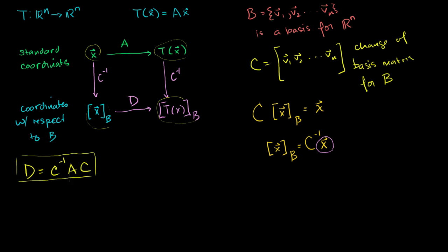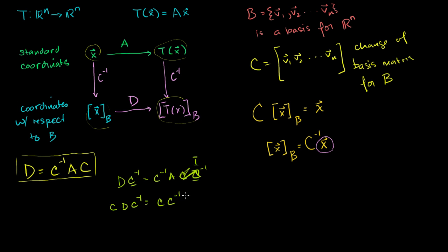This relation from the last video: if we have our change of basis matrix, its inverse, and our standard basis linear transformation matrix, we can get D. Let's see if we can go the other way — if we have D, can we solve for A? If you multiply both sides on the right by C inverse, you get D times C inverse equals C inverse A. Then multiply both sides on the left by C, and you get C D C inverse equals A. So A equals C times D times C inverse, which is another interesting result to add to our toolkit.